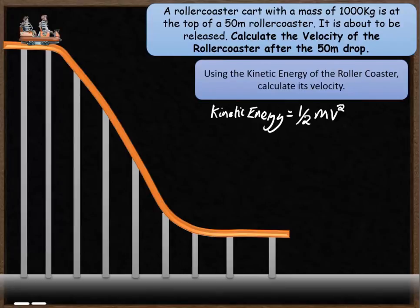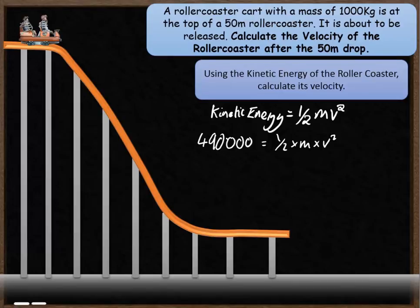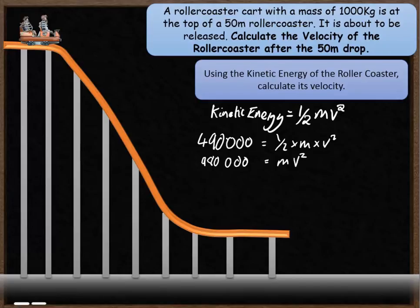So using the formula for kinetic energy, half mv squared, we put in the numbers: 490,000 is equal to a half times mass times velocity squared. To get rid of the half, I multiply everything by 2, giving 980,000 joules equals mass times velocity squared. I then divide by mass — the mass of the cart is 1,000 — so 980 is equal to velocity squared.